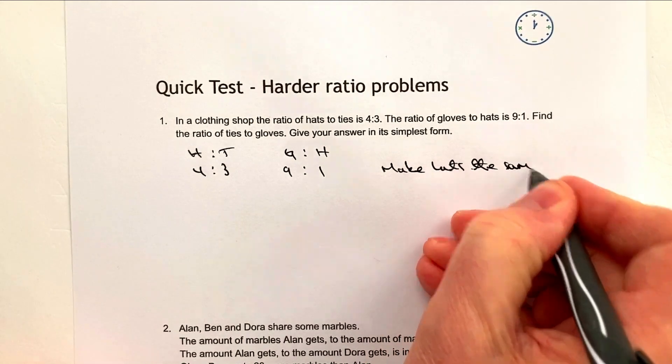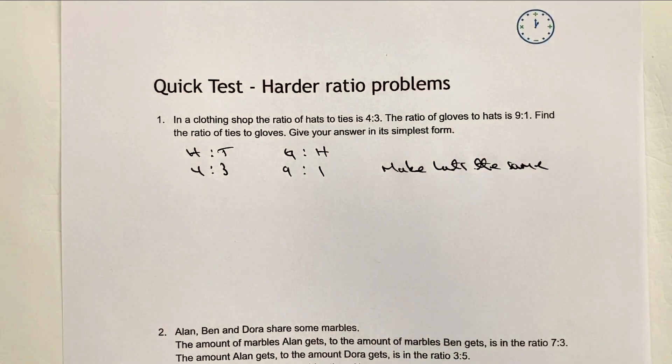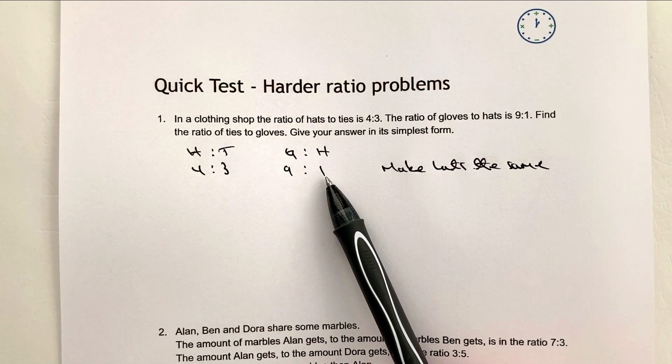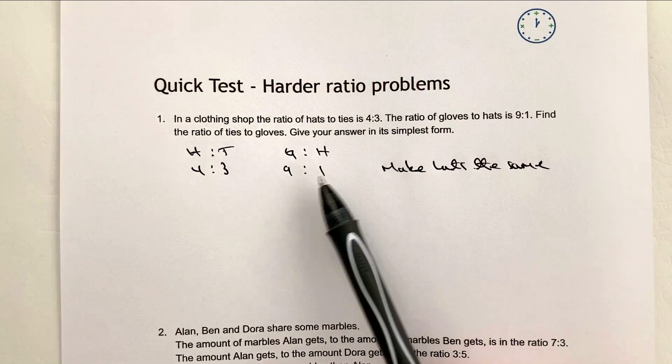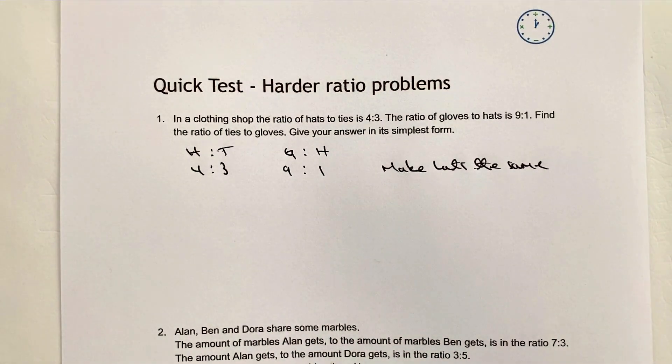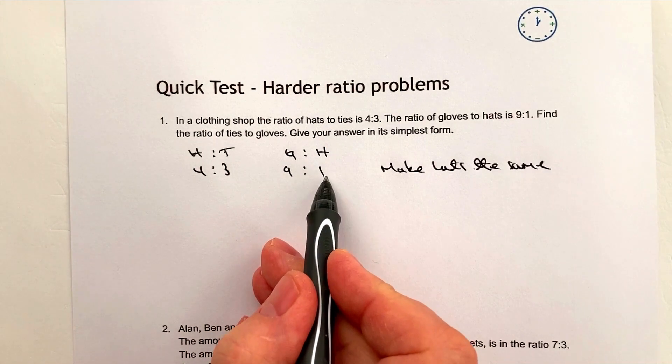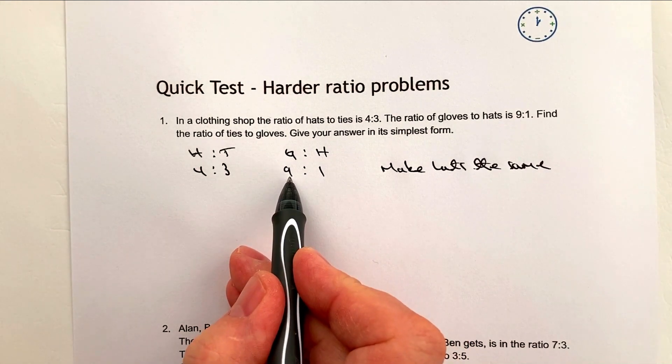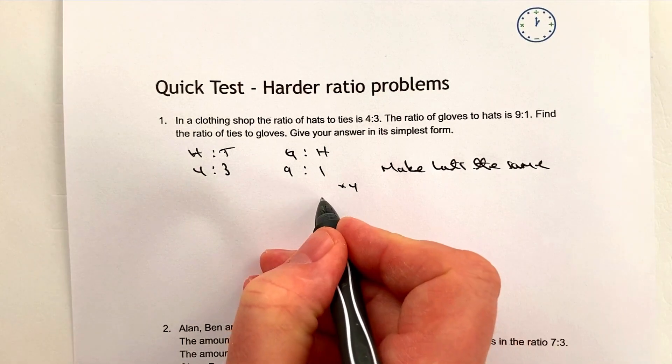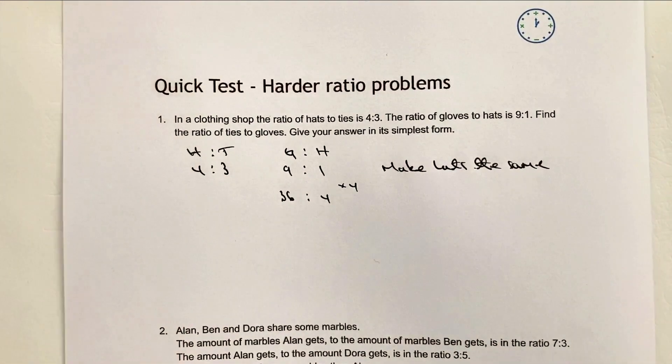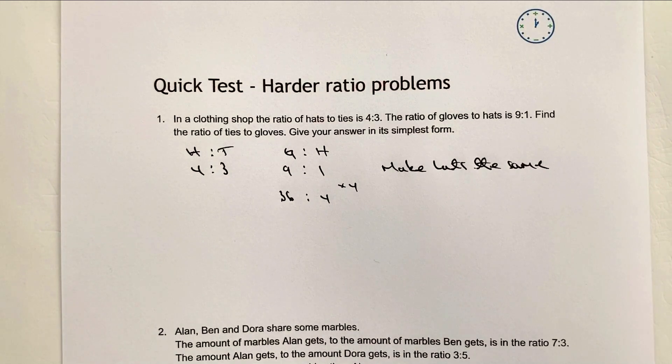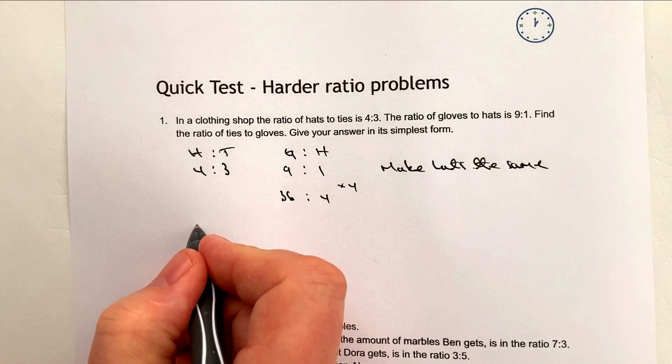Now in order to do that, all I need to do is to multiply this by 4. So if I multiply this by 4, I'm going to get 4 hats, which is great because it's the same as that. But don't forget, if you multiply this by 4, you have to multiply the 9 by 4 as well. So I'm going to times it by 4, I'm going to get 4 and then I'm going to get 36.